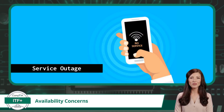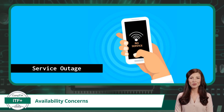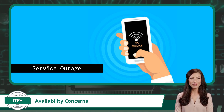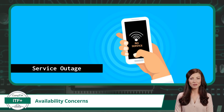Even if all physical components are intact and powered, service outages can still occur. These outages can stem from software glitches, overloaded systems, or issues with local and wide-area network connection lines. A service outage can prevent users from accessing essential platforms or applications, disrupting workflows and communication.